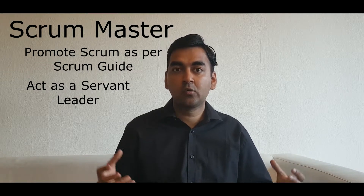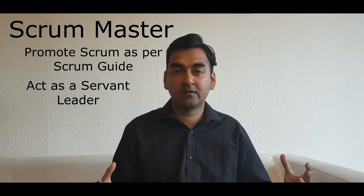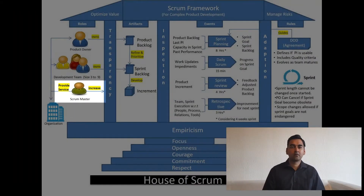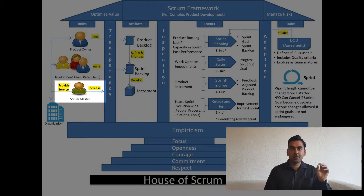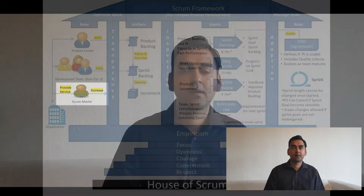This is done in order to enhance the productivity and the value that a Scrum team can deliver. If you look at our house of Scrum, you can see arrows moving out from the Scrum Master role — it indicates the Scrum Master's service to the Product Owner, to the Development Team, and to the Organization. Let's look at each one of them one by one.